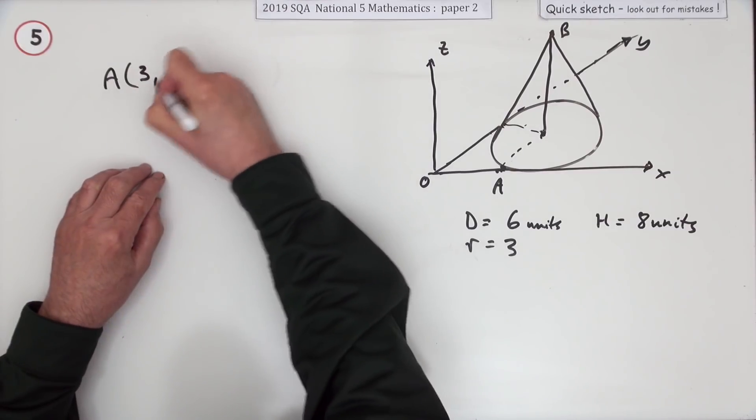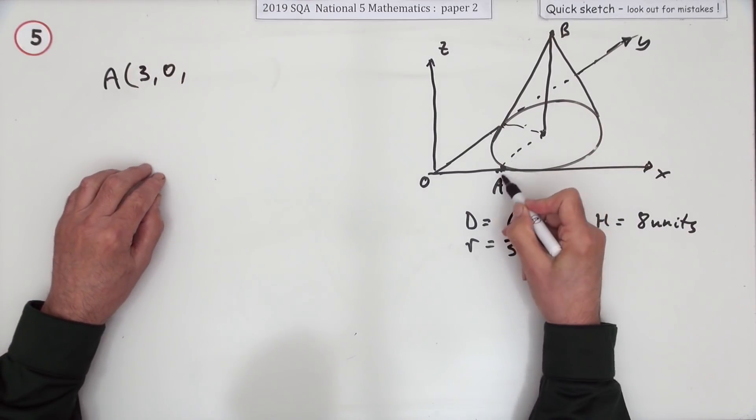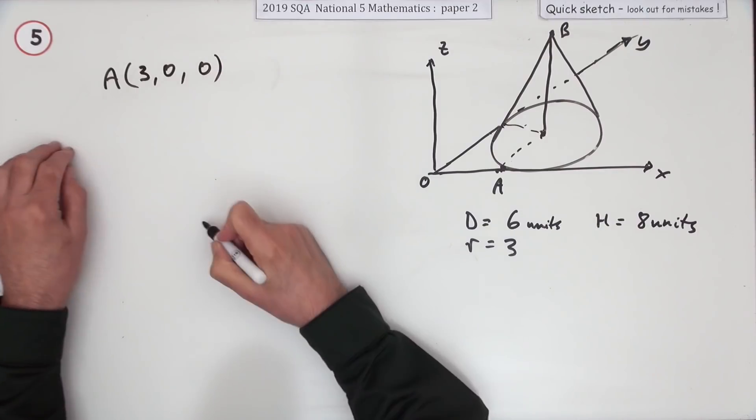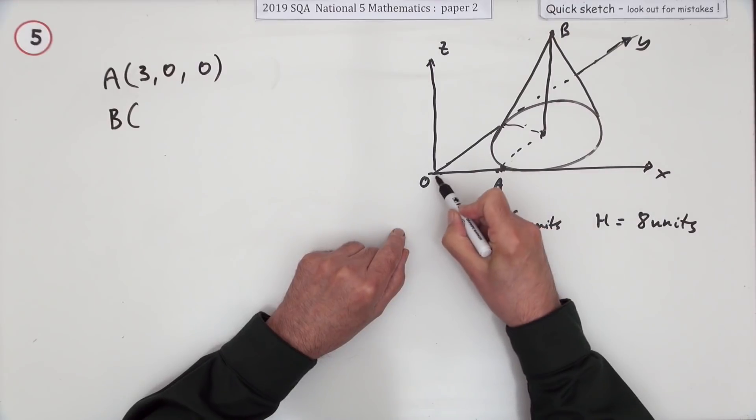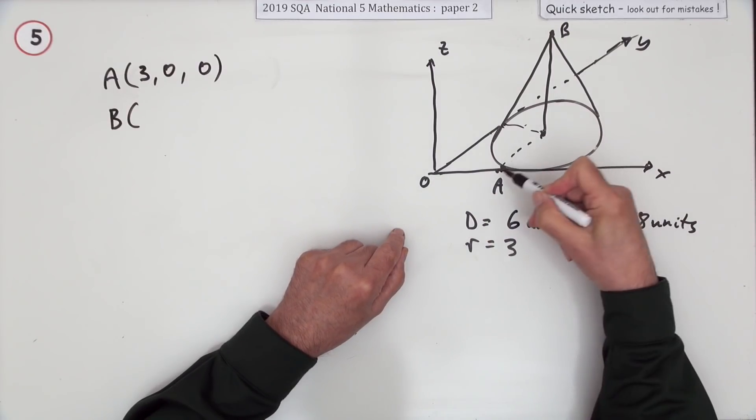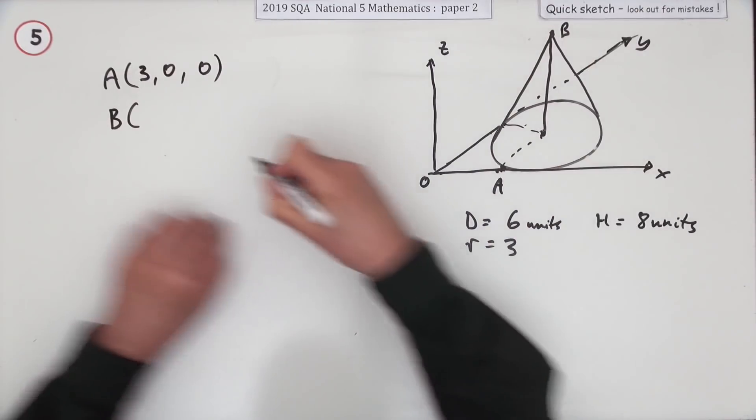And that distance is eight, but it's only asking for A. So A is going to be three along, but you're not going back at all and you're not going up at all, so it's just (3, 0, 0). It's B when you're going to be going all the way through—it's going to be three along, then three back, and then eight up.